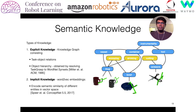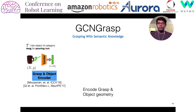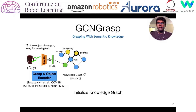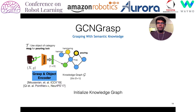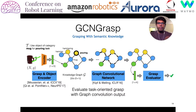Using both types of semantic knowledge, we apply it to the grasping task. Our framework is called GCN-GRASP. The input is a point cloud of the object — say we want to use a mug for the pouring task. We use prior work to encode this point cloud and grasp into a fixed-dimensional feature vector. We also have the knowledge graph, and we attach a grasp node to the corresponding class in the knowledge graph, initializing it with the shape vector. The other nodes are initialized from word2vec embeddings. We then do standard graph convolutions — message passing between nodes — and finally take the grasp node embedding to evaluate the grasp.